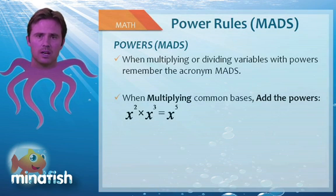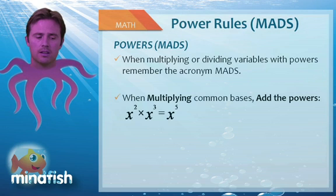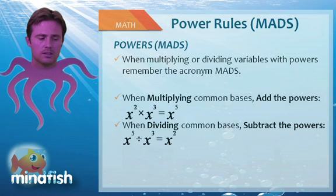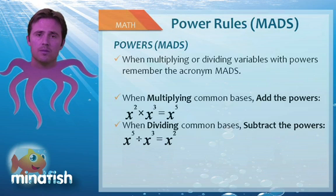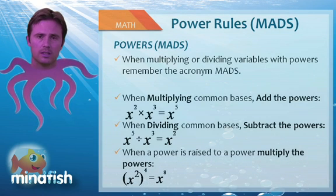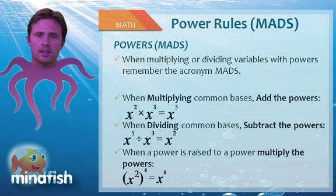So again, x squared times x to the third, we would add the two and the three to get x to the fifth. Dividing means subtract. So if we had x to the fifth divided by x to the third, we would do five minus three, which would yield x squared. And when a power is raised to a power, we're going to multiply. So in this one, x squared raised to the power of four would yield x to the eighth.